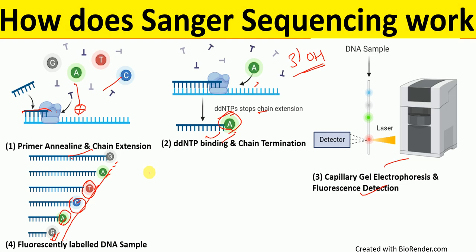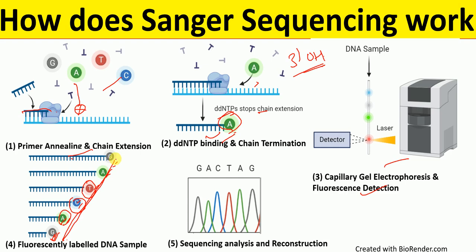Each of these ddNTPs corresponds to the sequence in our original strand. For this particular sequencing reaction, the strand sequence from 5' to 3' would be G-A-C-T-A-G, as shown here. Reading from smallest to largest corresponds to the 5' to 3' sequence of the DNA. After sequencing analysis and reconstruction, we can compare the result to a reference sequence — if it matches, we have the correct plasmid sequence.